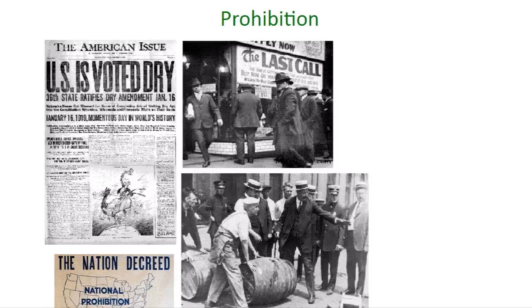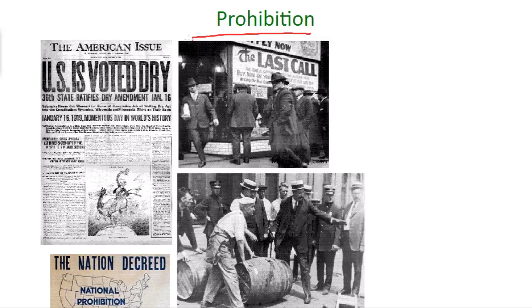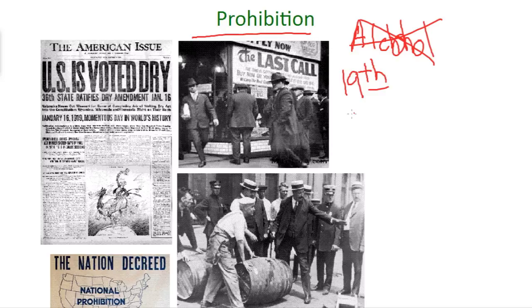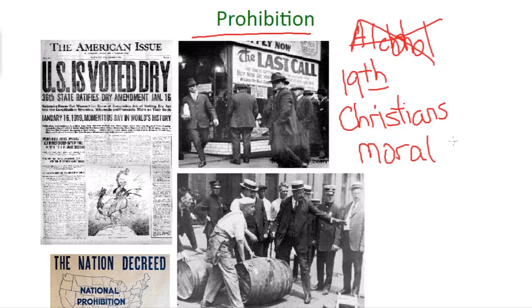The second trend we're going to focus on is prohibition — this effort to ban the production and sale of alcohol. Prohibition predates the 1920s, going back to the early decades of the 19th century. Primarily in the 19th century, the groups that were anti-alcohol were evangelical Christians who felt that alcohol had bad consequences: it led people to do stupid things, led to abuse of women and children by drunken husbands and fathers, and led people to spend all their money on booze. For the most part, this was Christians organizing to make life better because they viewed alcohol as a moral evil.